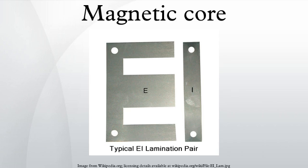A magnetic core is a piece of magnetic material with high permeability used to confine and guide magnetic fields in electrical, electromechanical, and magnetic devices such as electromagnets, transformers, electric motors, generators, inductors, magnetic recording heads, and magnetic assemblies.